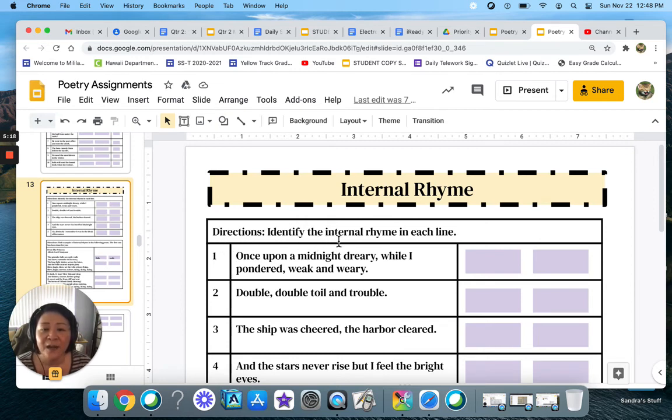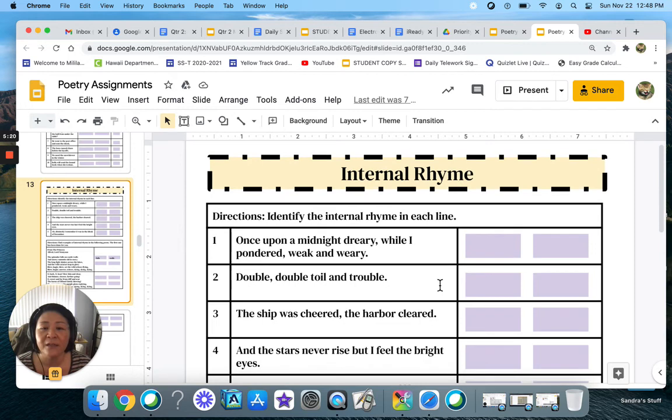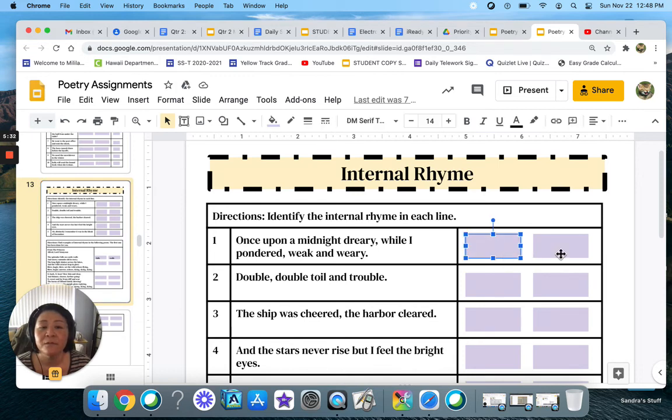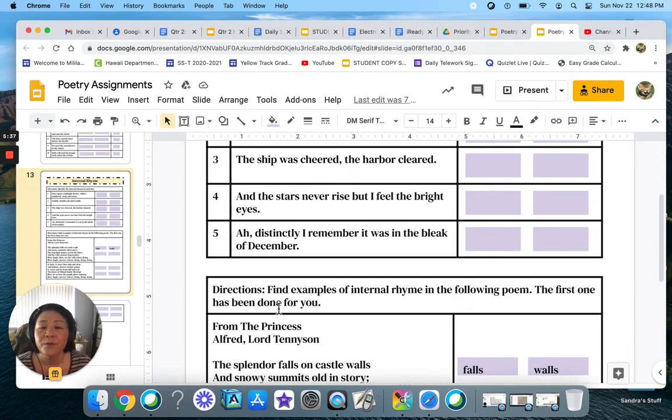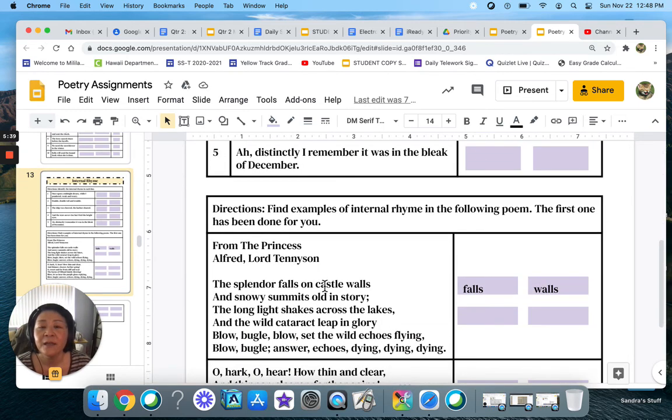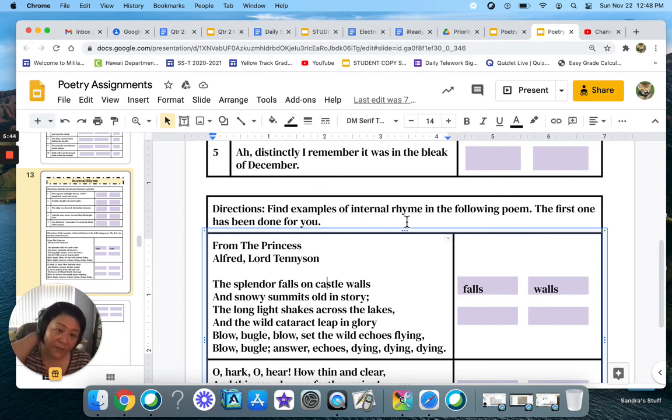So the directions say, identify the internal rhyme in each line. So once upon a midnight dreary, while I pondered weak and weary. You would type in here the words that rhyme. And so you will just do those. And then here again, you are finding examples of internal rhyme in the following poem. This first one has been done for you.